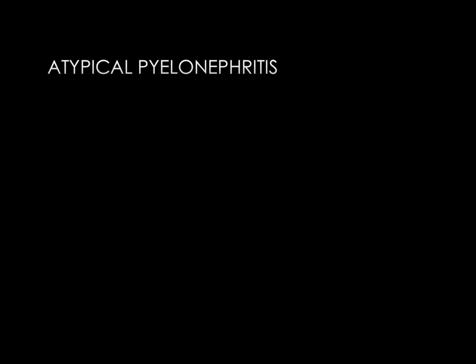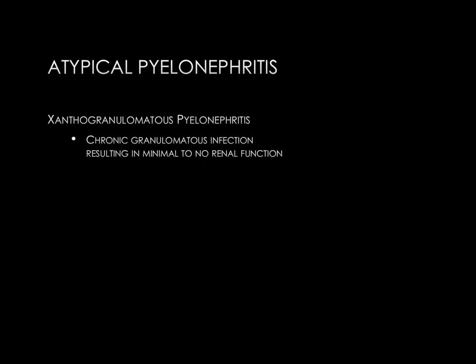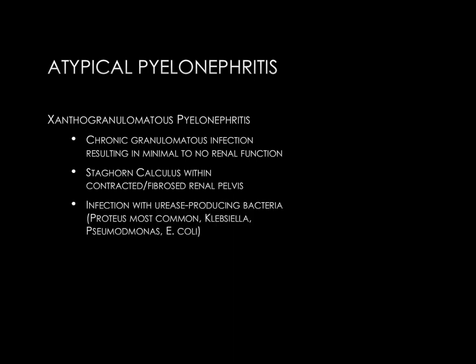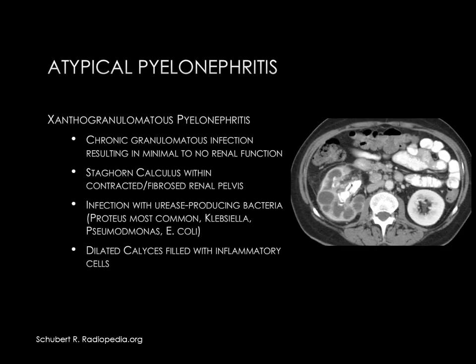Xanthogranulomatous pyelonephritis, sometimes called XGP, is a chronic granulomatous infection of the renal parenchyma which eventually results in no renal function of the affected kidney. It is characterized by a staghorn renal calculus within the fibrosed renal pelvis. The infection is with urease-producing bacteria, most commonly Proteus, but also Klebsiella, Pseudomonas, or E. coli. Another characteristic imaging feature is dilated calyces filled with inflammatory cells. The example shown demonstrates a staghorn calculus filling the renal pelvis and multiple cystic spaces within the renal parenchyma, corresponding to the dilated calyces filled with inflammatory cells.